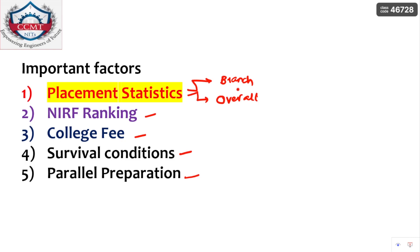If you are looking for good placement statistics and also preparing for a government job, and you want everything in one college, that will be very difficult. You have to compromise on at least one factor. Many people want good placements, government job preparation time, and good academics all in one college — that is very hard to achieve.